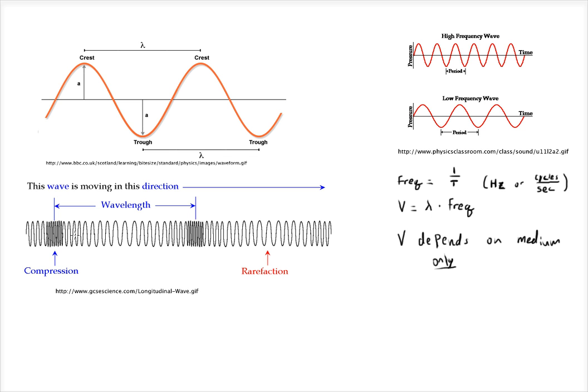And these are what correspond to your crests and troughs. So if I were to graph this, I could have this compression here represent this, and then the wavelength would be the distance between compressions, which would just be like this.